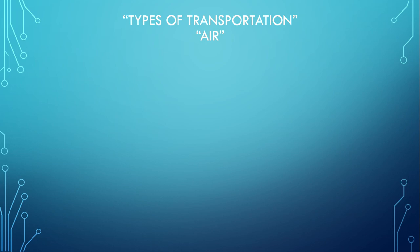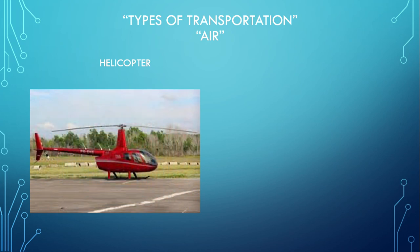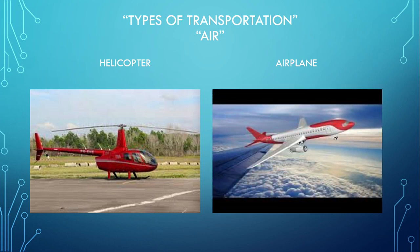Types of transportation — first: air. We have the helicopter. As you can see in your copy and in the video image, this is the helicopter. The pronunciation is 'helicopter.' Next, airplane — look at your handouts or copy. This is an airplane.